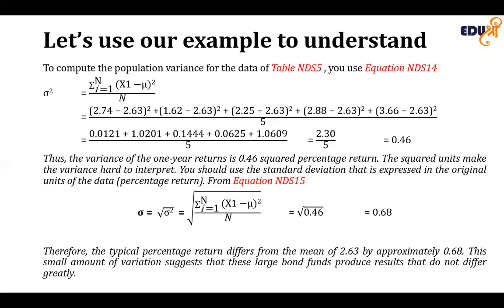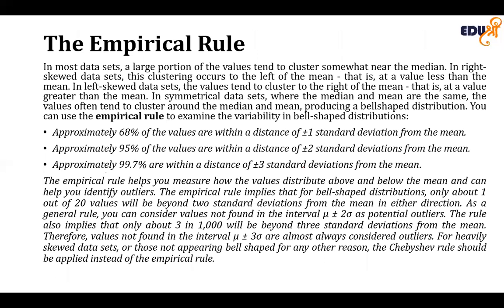The typical percentage return differs from the mean of 2.63 by approximately 0.68, and this small variation suggests that the larger funds produce results that are not greatly different. In most data sets, a large portion of values tends to cluster near the median. In right-skewed data, clustering occurs to the left of the mean; in left-skewed data, values cluster on the right side of the mean.